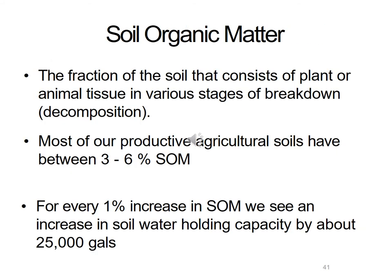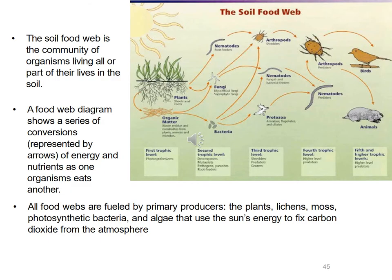The amount of organic matter in a soil is very important. Most agricultural soils have about three to six percent soil organic matter. For every one percent increase in soil organic matter, we see an increase in soil water-holding capacity by about 25,000 gallons. So organic matter is really important to be part of the soil — it holds water and supports plants better.